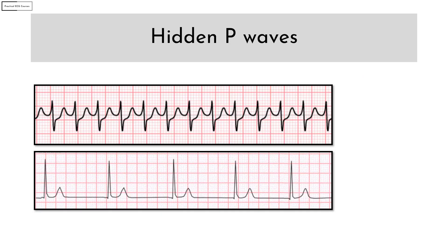Hidden P waves are different from absent P waves. In absent P waves, there is no atrial depolarization. But in hidden P waves, there is atrial depolarization, but it occurs at the same time as ventricular depolarization and therefore it is hidden within the QRS complex. As a result, there is no visible P wave on the ECG.